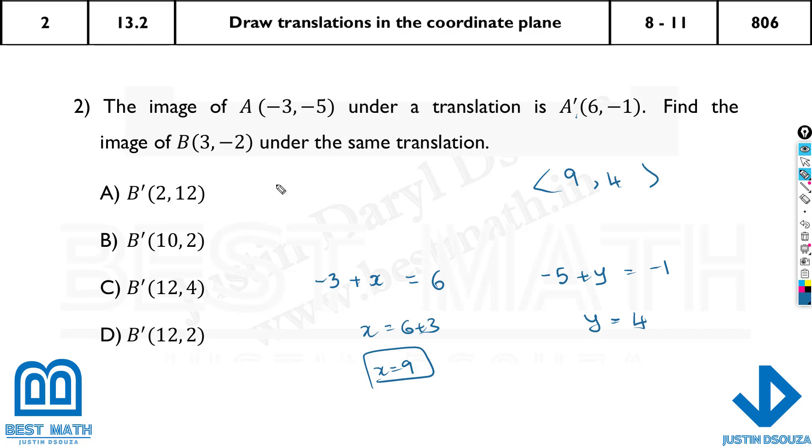We need to translate this now. So what happens here? It is 3 plus 9, and -2 plus 4. So what happens is it will be 12, and we have 2, that is the newly formed image, that is B prime. And here we go. That's option D.